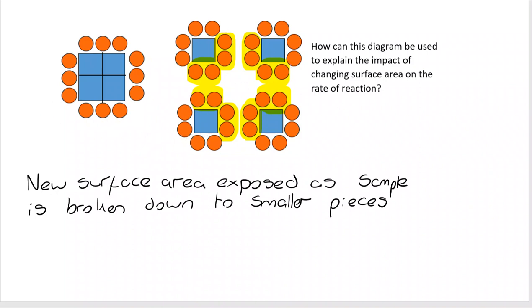And that's going to allow for more collisions, more successful collisions, and therefore a faster rate of reaction. And similar to what we saw on the previous video with concentration and with pressure, we can actually quantify this. If I double the surface area, I will double the number of collisions that can take place.